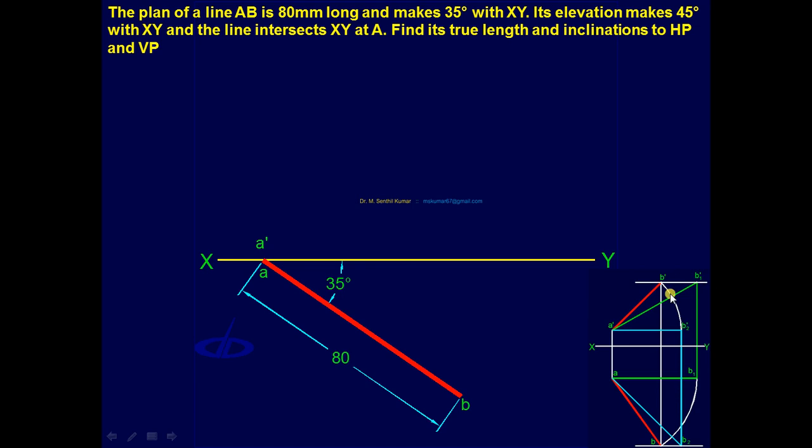I will draw the dummy picture. This is the question. Read the question carefully. The plan of line AB, that is top view of line AB is 80mm. That means true length is not 80. The top view length is 80. So the length of top view and its angle is given. Top view is always on the bottom side of the XY line. So draw that first.